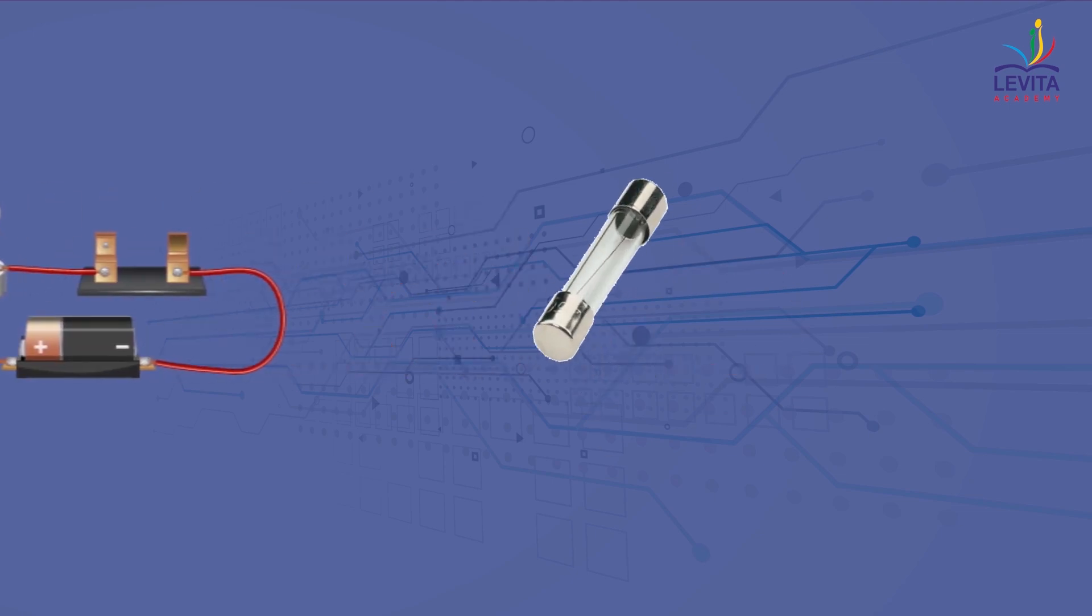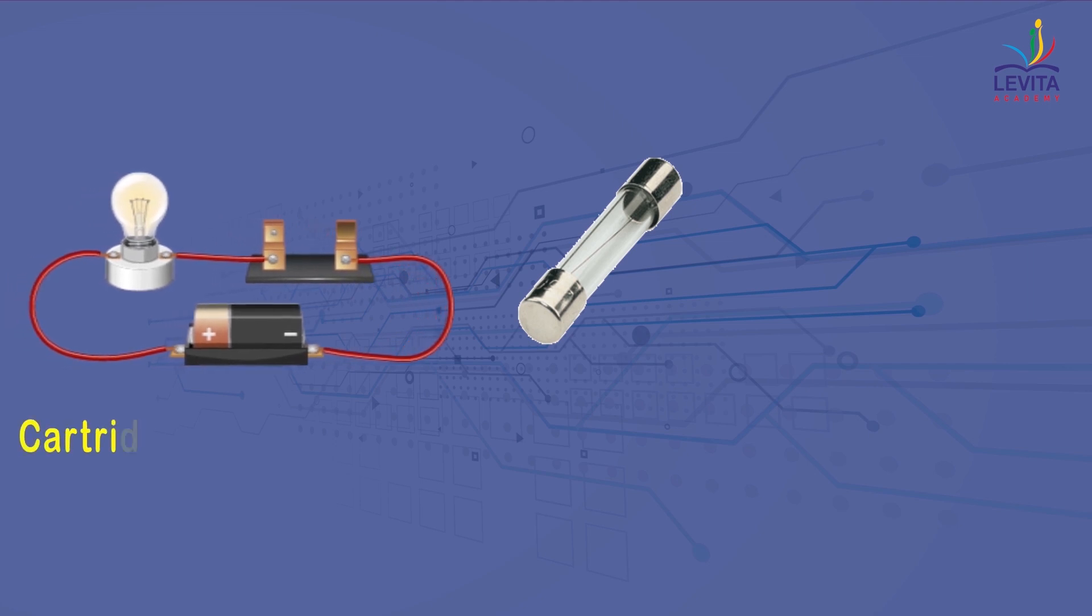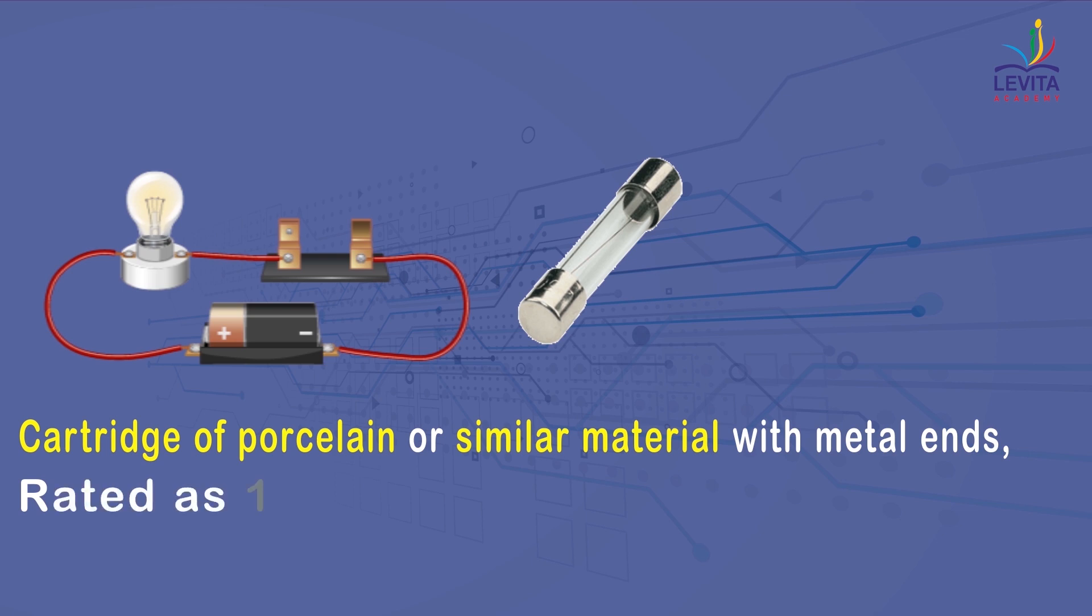The fuse wire used for domestic usage is usually encased in a cartridge of porcelain or similar material with metal ends and are rated as 1A, 2A, 3A, 5A, 10A, etc. depending on the power consumption of the appliances.